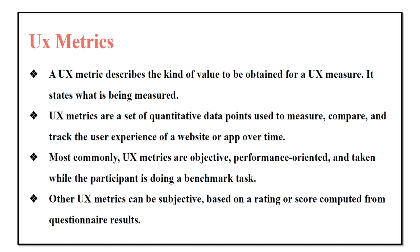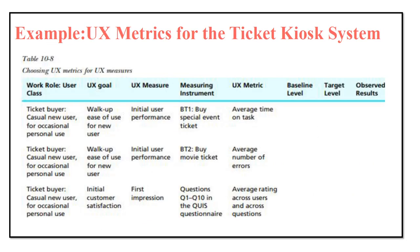Next, we come to UX metric. UX metric is what kind of value we need to obtain for the UX measure. This also depends on objective and subjective values. In the table, for initial performance measured by the special event ticket task, the UX metric is the average time on task — for example, how much time the user takes to complete buying a special event ticket from start to finish.